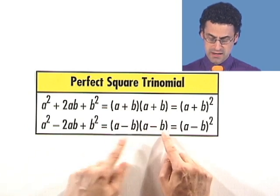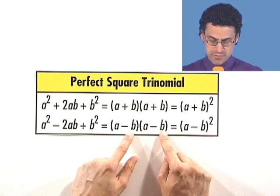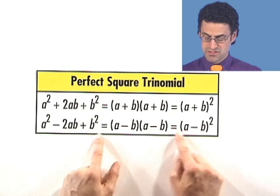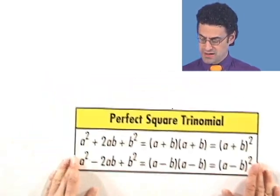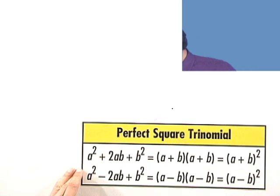Net result, negative 2ab. Negative b times negative b is positive b squared. So there we can see that we have a minus b all squared. These are really important and fun.